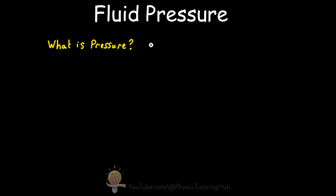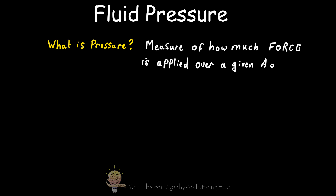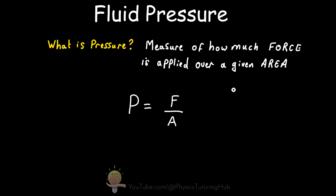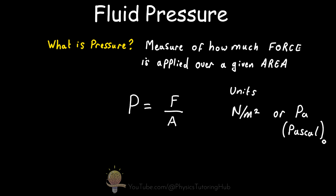What is pressure? Pressure is the measure of how much force is applied over a given area, and the formula for pressure is: pressure equals force in newtons divided by the area the force is applied over. The units of pressure are newtons per meter squared, or pascals.